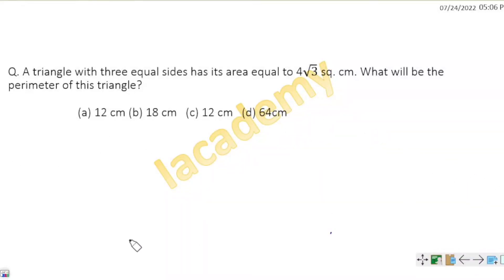A triangle with three equal sides has its area equal to 4 root 3 square centimeter. What will be the perimeter of the triangle? We define a triangle with three equal sides where the area is equal to 4 root 3 square.